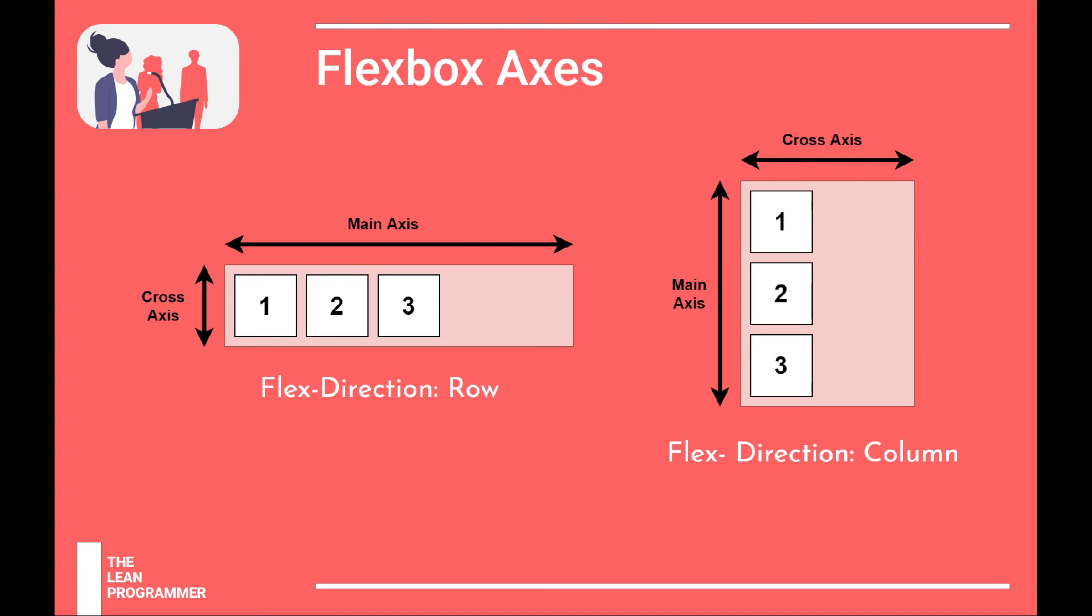And the cross axis will be perpendicular to it. So there is no concept of vertical or horizontal, but there is a concept of flex direction. So if the direction is row, then the main axis is horizontal and the cross axis is vertical.